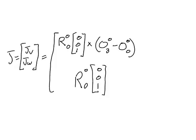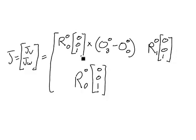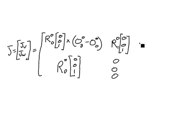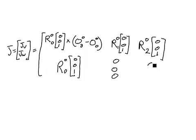For the two prismatic joints (columns two and three), the JV part is the rotation matrix from frame 0 to frame i-minus-1, times [0, 0, 1] — so R(0→1) times [0,0,1] for column two, and R(0→2) times [0,0,1] for column three. The J-omega (rotational velocity) part for both prismatic joints is simply [0, 0, 0].